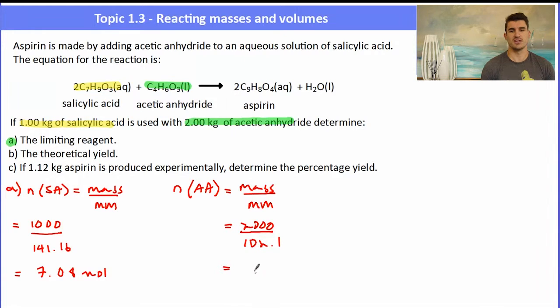To work out the limiting, remember the little trick: divide by the stoichiometric coefficients. Here we can see that salicylic acid will be the smallest number once we do the division - it will be the limiting reagent. The acetic anhydride is in excess.